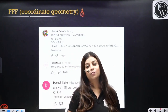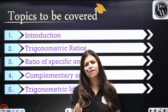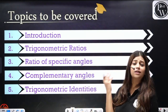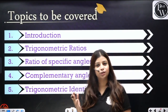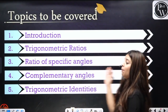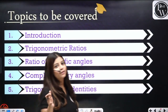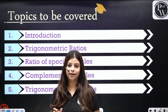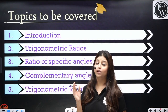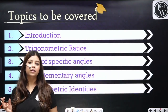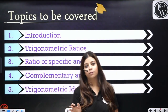Let's start with our trigonometry chapter. We will cover: the introduction — what trigonometry is and why we study it — then trigonometric ratios, ratios of specific angles, complementary angles, and trigonometric identities. The identities part is really important because most questions come from it. We have three identities in trigonometry, but those three can be used in multiple ways across a variety of questions.